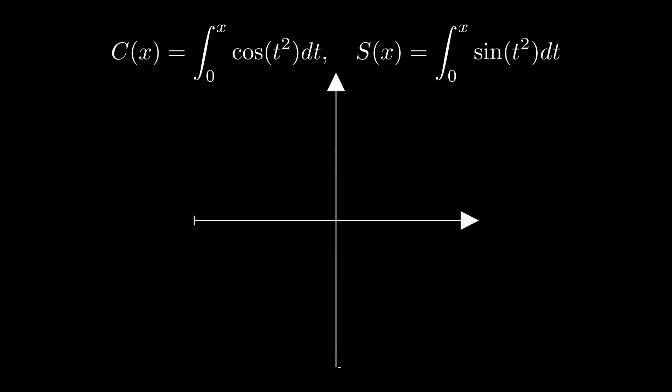Lastly is the Fresnel integral, C of x and S of x. Our final example comes from integrating cosine of t squared and sine of t squared. These are called the Fresnel integrals. We define C of x as the integral from 0 to x of cosine of t squared dt and S of x as the integral of 0 to x of sine of t squared dt.